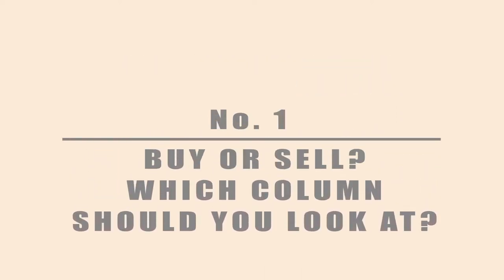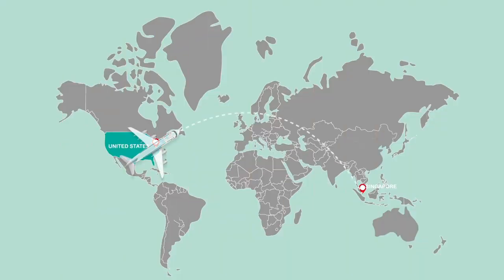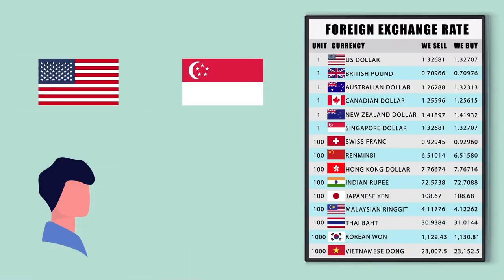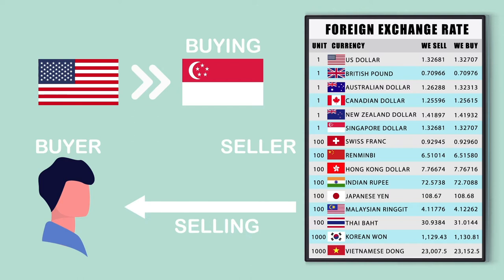Number one: buy or sell — which column should you look at? Assuming you are in the USA traveling to Singapore, here is what you might see at the exchange board: Singapore dollar — we buy 1.327; Singapore dollar — we sell 1.326. So if you wish to change your USD to Singapore currency, it means you are buying the Singapore dollar with US dollars. This makes you the buyer and the money changer the seller, so you should look at the column that says 'we sell.'